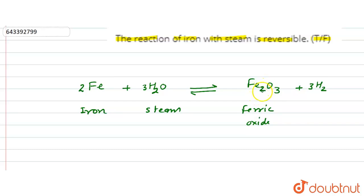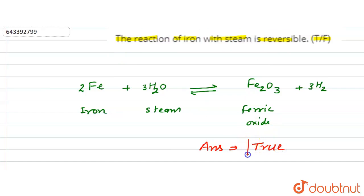Therefore this reaction is reversible. The answer to this question is TRUE — the given statement that the reaction of iron with steam is reversible is true. The reason behind this is the electrochemical series: according to it, iron is more reactive than hydrogen.